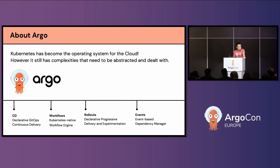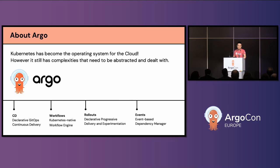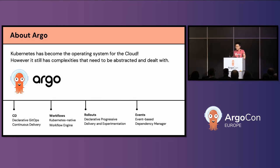I know we have new friends here and old friends here, so I won't assume everyone knows Argo perfectly. I'll give a little bit of history about what Argo is doing and how we got there. The overall Argo idea is quite simple — we believe Kubernetes is the operating system for the cloud, like Linux for a single machine. Argo is to fill the gap and make it easy to adopt Kubernetes with Kubernetes-native solutions.